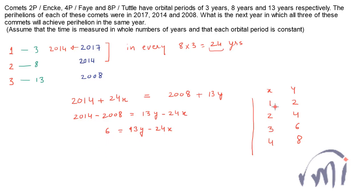If I assume the value of x as 1 and the value of y as 2, 13 multiplied by 2 minus 24 multiplied by 1 will give us 26 minus 24, which is 2. When I assume x as 2 and y as 4, this will be 52 minus 48, which equals 4.